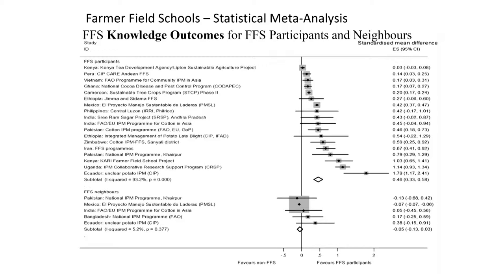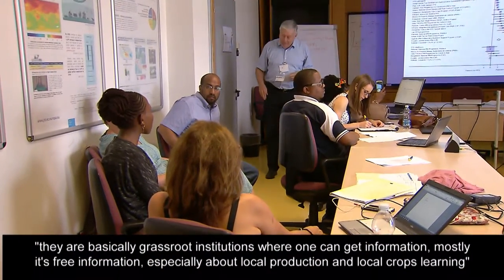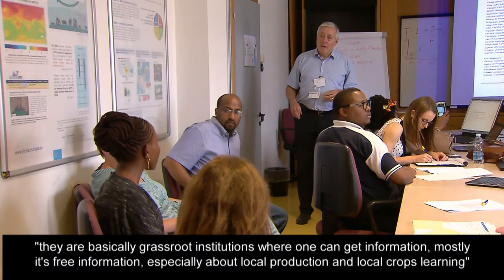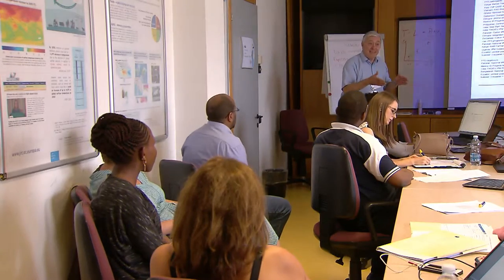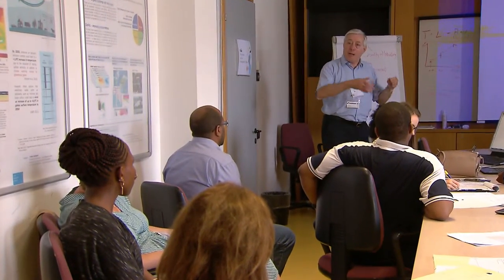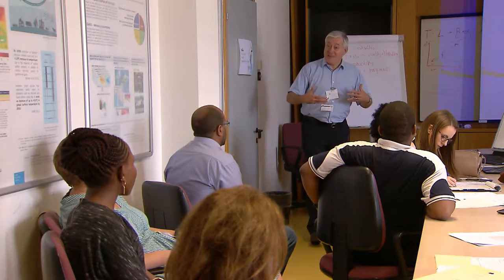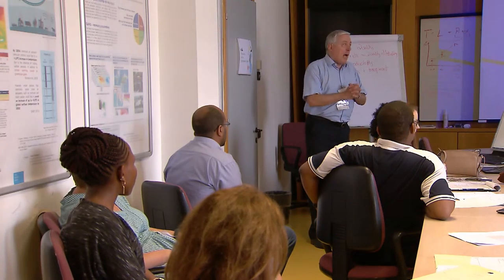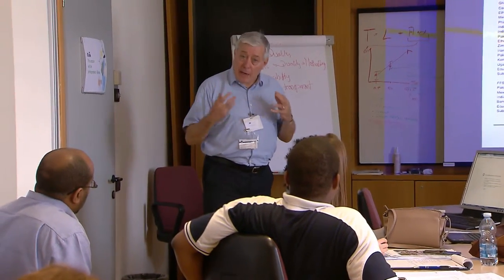We need to go back to the farmer field school example. Who knows what farmer field schools are? They're basically grassroots institutions where farmers can get information — mostly free information about local production and local crops. It's about teaching farmers about farming in the field rather than an institutional environment, covering soil, crop rotation, and water management. It's literally grassroots, bottom-up learning, strongly favored by organizations like the Food and Agricultural Organization and the World Bank.